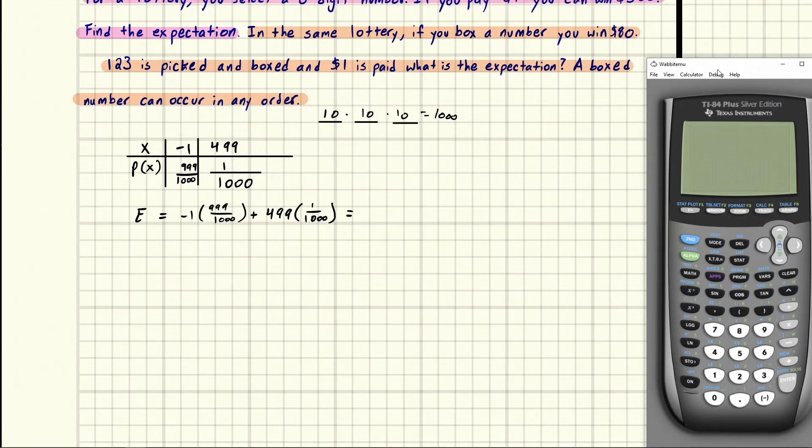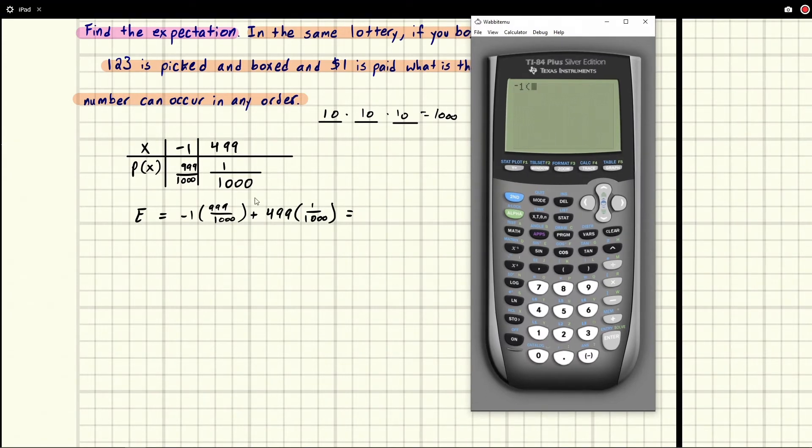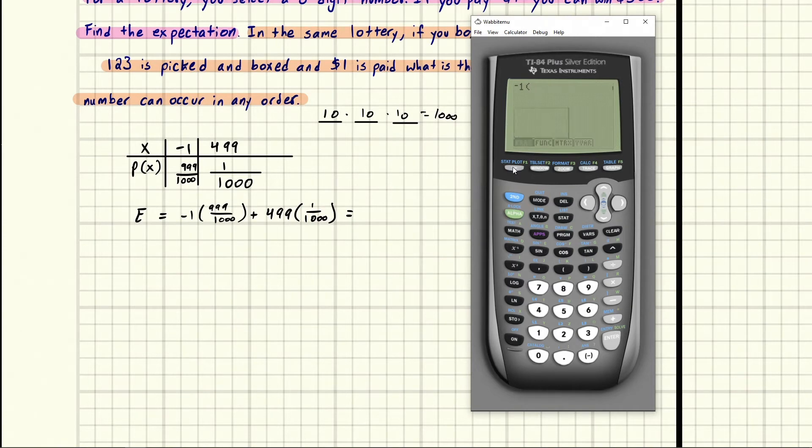So we're going to go ahead and do this. So we've got minus one times, and then we've got a fraction, I'm going to go ahead and use the actual fraction option here, you hit the green key and then F1 up here. And we're going to do 999 over 1000. You could also type it out longhand. I like typing the fractions. So we're gonna do plus 499 times the fraction command. And we're going to do one over 1000.